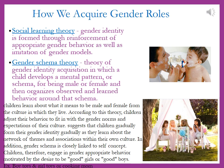The second theory, the gender schema theory, is a theory of gender identity acquisition in which a child develops a mental pattern or schema for being male or female and then organizes observed and learned behavior around that schema. All it means is that children learn about what it means to be male and female — or really masculine and feminine — from the culture in which they live. According to this theory, children adjust their behavior to fit with the gender norms and the expectations of their culture, and it suggests that children gradually form their gender identity as they learn about the network of themes and associations within their own culture. This kind of gender schema is closely linked to self-concept, so children engage in gender-appropriate behavior motivated by a desire to be a good boy or a good girl.